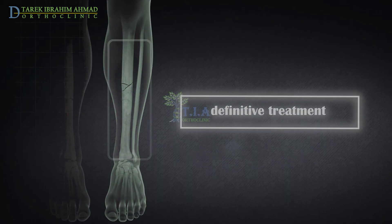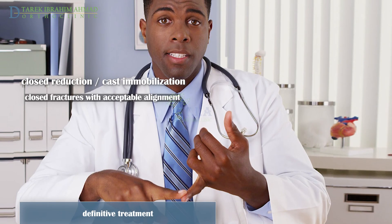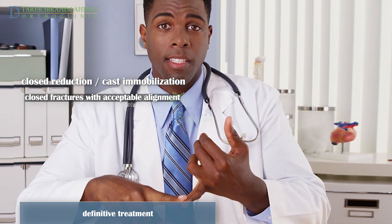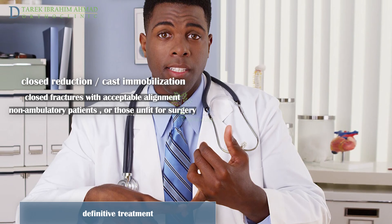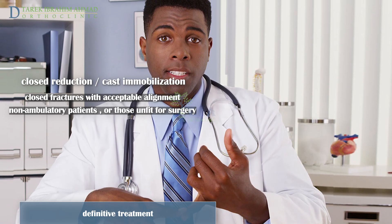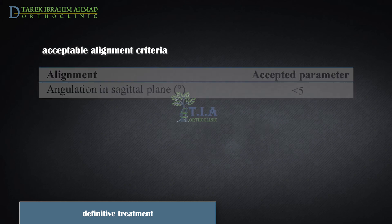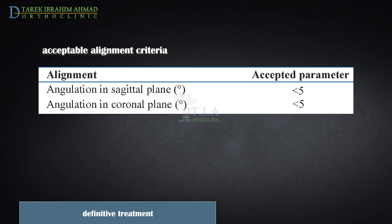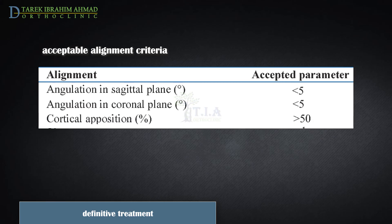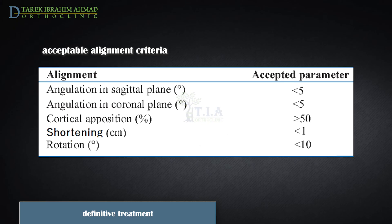Definitive treatment: closed, well-aligned, non-displaced tibial shaft fractures may be definitively treated with a long leg cast. Certain patients who may be non-ambulatory or unfit for surgery can also be treated non-surgically. The acceptable alignment criteria are: less than 5 degrees varus/valgus angulation, less than 10 degrees anterior-posterior angulation, greater than 50 percent cortical apposition, less than 1 centimeter shortening, and less than 10 degrees rotational malalignment.